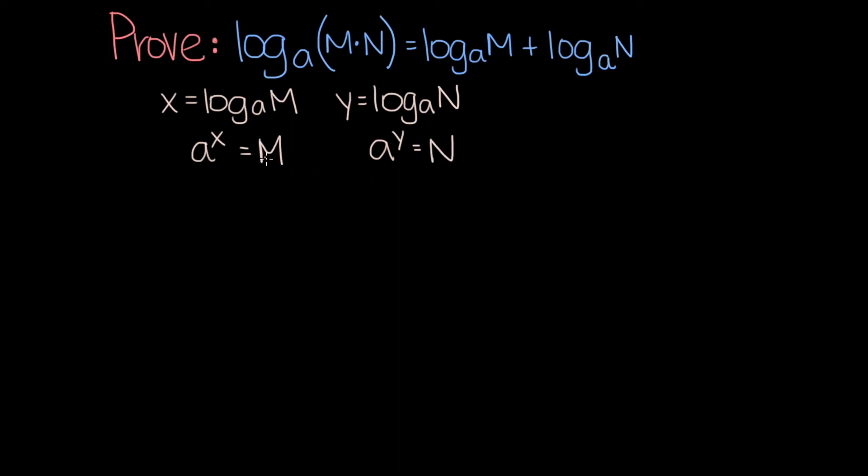Now based on these two exponential equations, we can write the following equation: a to the x times a to the y equals m times n. So the left hand side becomes a to the x plus y is equal to m times n.